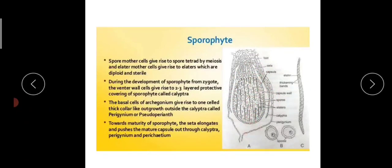This pushing causes the rupture of the protective layers. We know that the capsule has three protective layers: calyptra, perigynium, and perication. As the seta elongates, it pushes this capsule layer downwards.